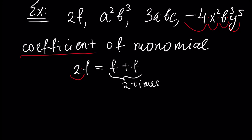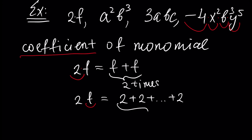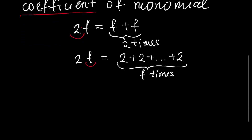Or we can say that F is a coefficient, and in this case we have 2 plus 2 and so on, plus 2 — an addition of the number 2, F times. So, a coefficient can be any factor of the monomial. For example, assume we have 3abc.